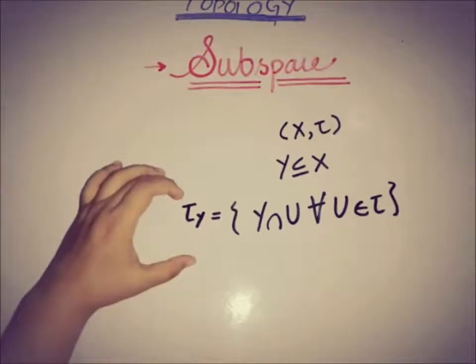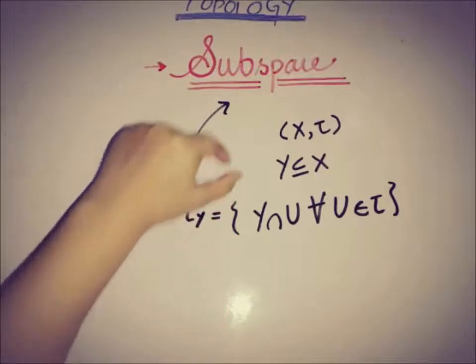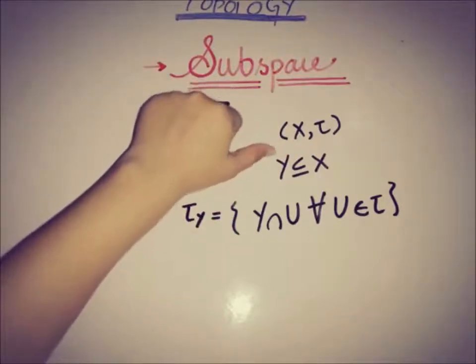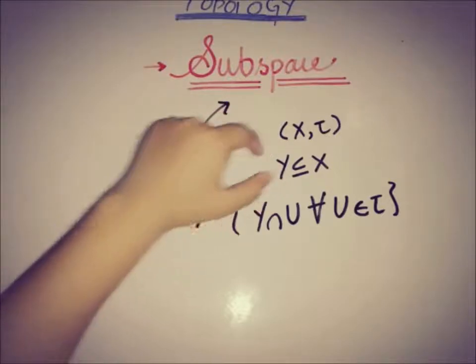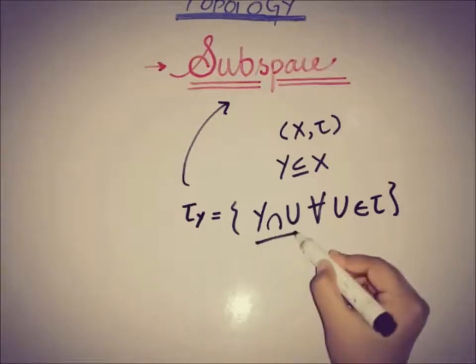This is said to be a subspace topology. If x is a set, tau is a topology, this is known as a topological space. If y is a subset of x and we define a collection tau y that has members of this form.